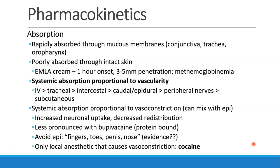These drugs are rapidly absorbed through mucous membranes, like the conjunctiva of the eye, the lining of the trachea, or the oropharynx, but they are very poorly absorbed through intact skin. One example of what needs to be done to get these to work through the skin is EMLA cream, which you may see in pediatrics, and it needs to be applied with an hour's advance notice. You need a pretty thick layer, usually covered with some sort of occlusive dressing. It only penetrates about three to five millimeters into the skin, and if you give too much of it, you run the risk of developing methemoglobinemia, which we'll discuss a little bit later.